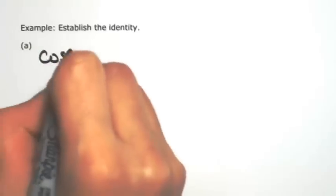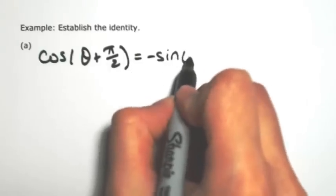Let's establish the identity of the cosine of theta plus pi over 2. We're going to show that that's the exact same thing as negative sine of theta.